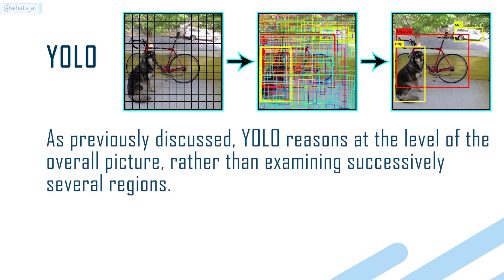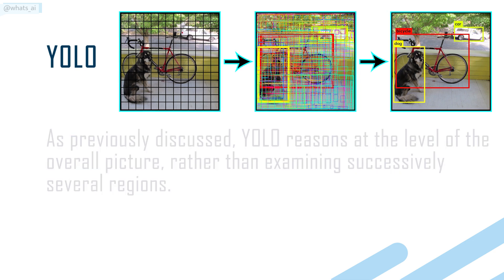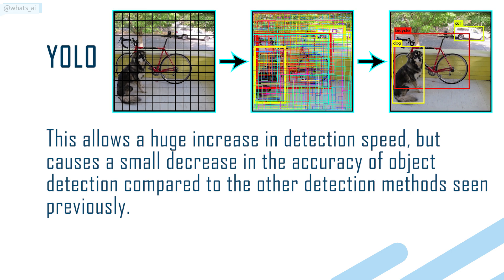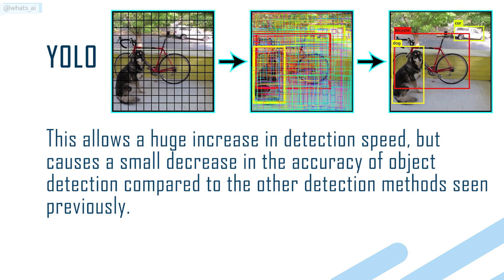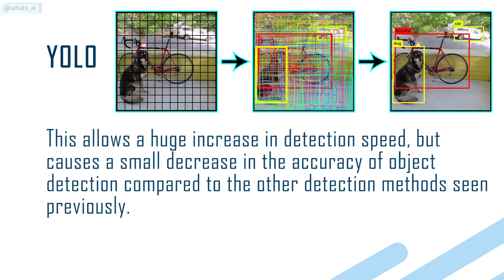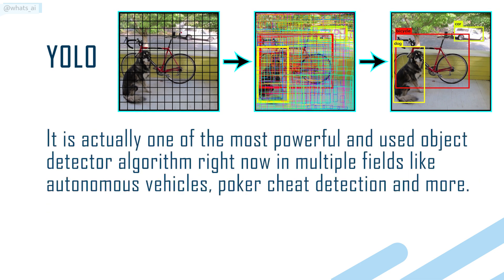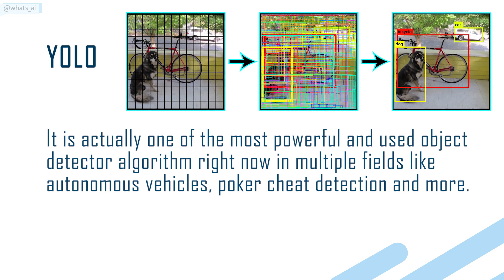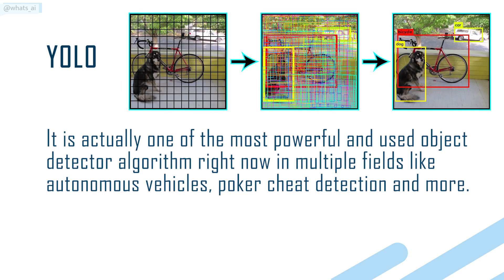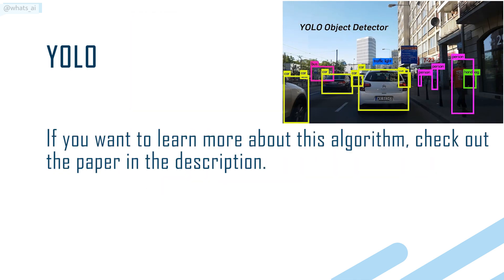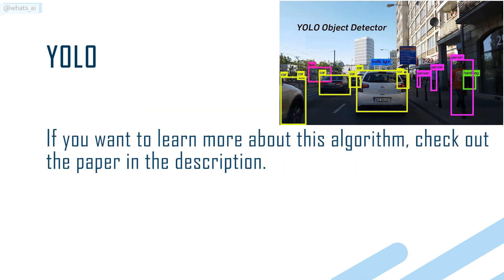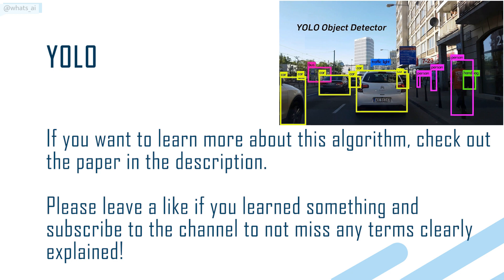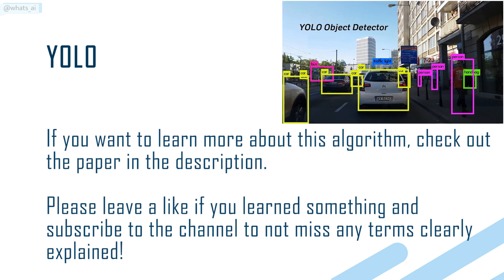As previously discussed, YOLO reasons at the level of the overall picture rather than examining several regions successively. This allows a huge increase in detection speed, but causes a small decrease in accuracy compared to other detection methods. It is actually one of the most powerful and widely used object detector algorithms right now, in multiple fields like autonomous vehicles, poker cheat detection, and more. If you want to learn more about this algorithm, check out the paper in the description. Please leave a like if you learned something and subscribe to the channel.